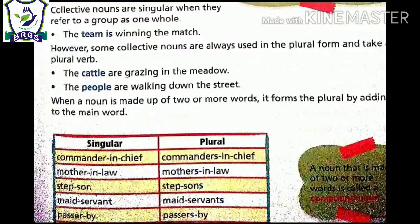Now we have nouns made up of two or more words - these are called compound nouns. How do we make compound nouns plural? We add S to the main word in the compound noun. For example, commander in chief - the main word is commander, so we add S after commander: commanders in chief. Mother in law becomes mothers in law. Maid servant - the main word is servant, not maid of course - so maid servants. This was all about your noun number. I hope you have understood it.